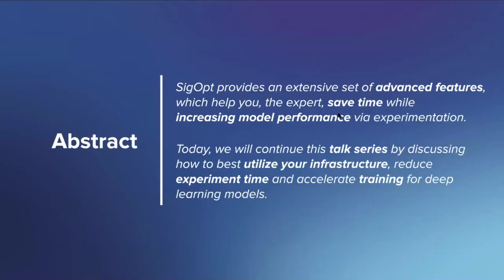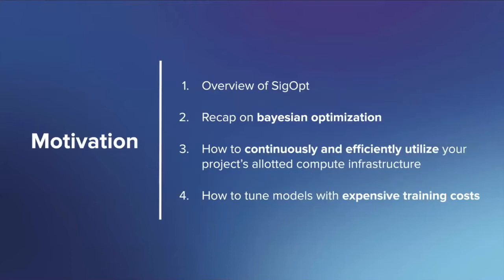For this second talk, for those of you who joined last time, you kind of know the structure — I've tried to do something similar this time. The abstract for this presentation is essentially: SIG App provides an extensive set of advanced features which helps you, the expert, save time while increasing model performance for your experimentation. Today we'll continue this talk series by discussing how to best use large infrastructure, reduce experiment time, and accelerate training for deep learning models.